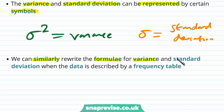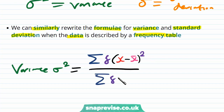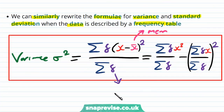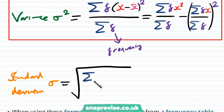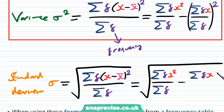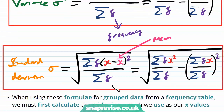We can rewrite the formulas for variance and standard deviation when data is described by a frequency table. The variance sigma squared equals the sum of F times (X minus X-bar) all squared divided by the sum of F. Expanding this gives: sum of Fx squared over sum of F, minus (sum of Fx over sum of F) all squared. Similarly, the standard deviation sigma is the square root of that expression. Here X-bar is our mean and F represents our frequencies.